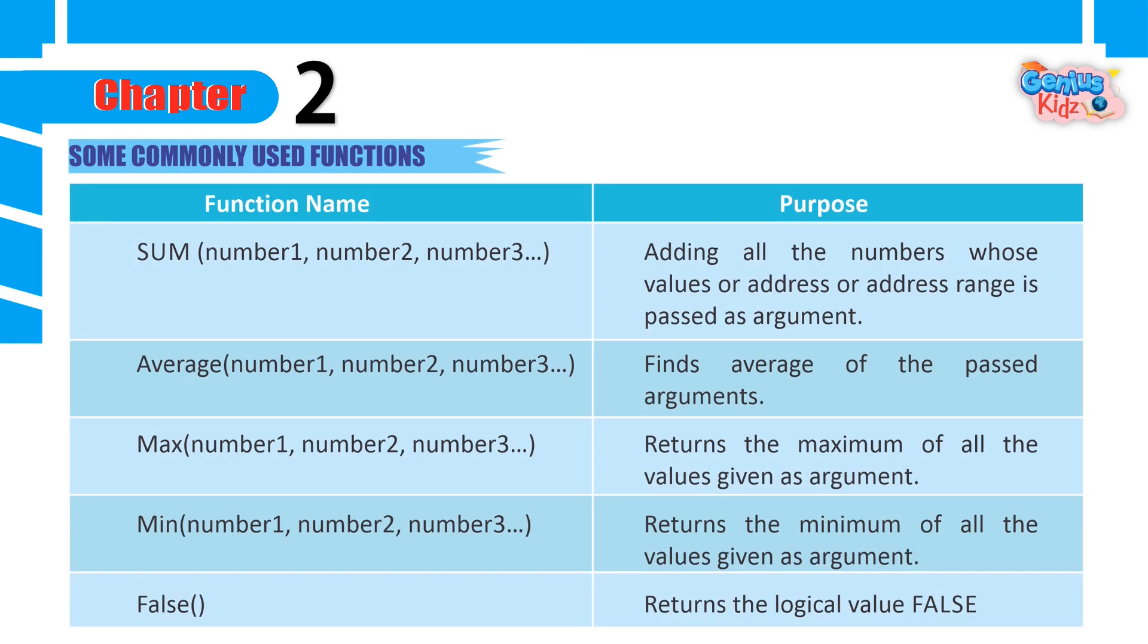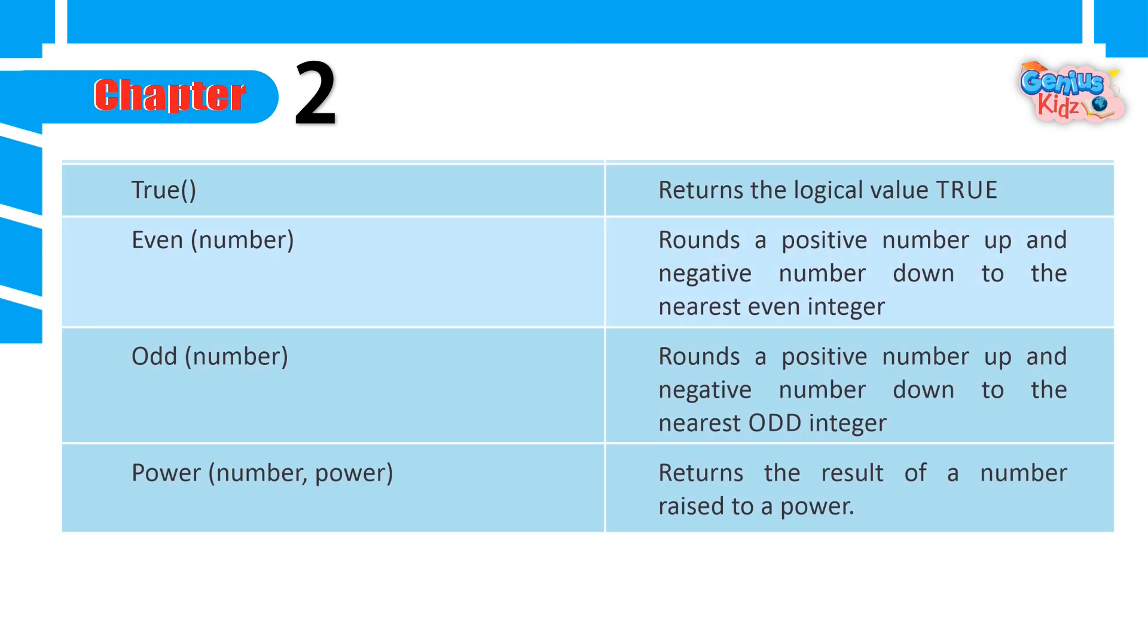Some commonly used functions: SUM adds all the numbers whose values or address or address range is passed as argument. AVERAGE finds average of the passed arguments. MAX returns the maximum of all the values given as argument. MIN returns the minimum of all the values given as argument. FALSE returns the logical value false. TRUE returns the logical value true. EVEN rounds a positive number up and negative number down to the nearest even integer. ODD rounds a positive number up and negative number down to the nearest odd integer. POWER returns the result of a number raised to a power.